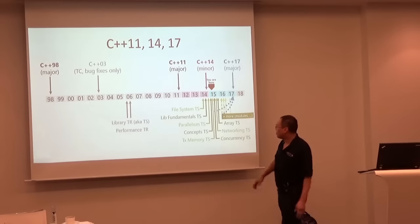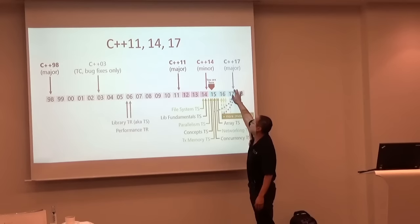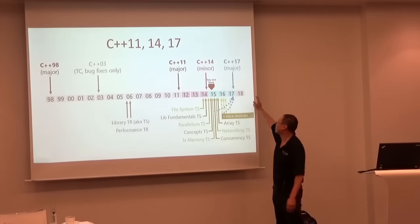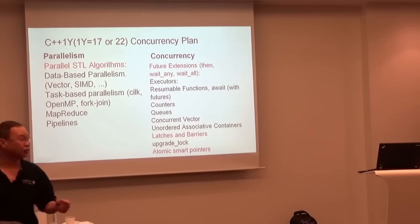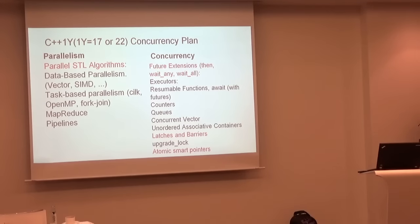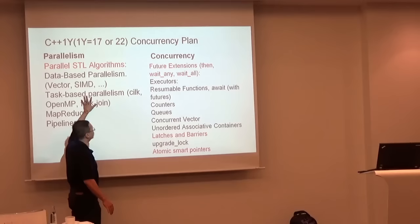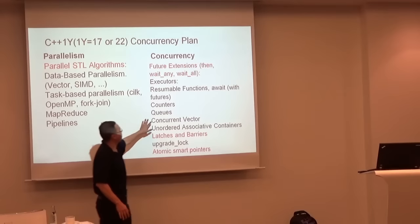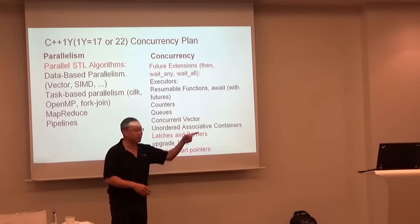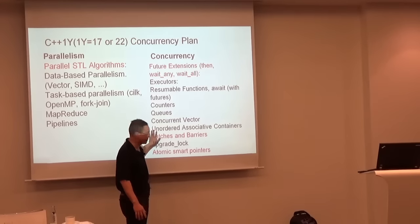In the C++ world, we've got all these Technical Specifications going, looking at releasing a major standard by C++17 and then C++20 and C++22. The big ones coming up are the parallelism and concurrency specifications. The parallelism TS has parallel STL — a way to parallelize the standard template library. The concurrency TS has future extensions: .then, wait, any, wait all, as well as latches, barriers, and atomic smart pointers. The parallelism TS future will likely add dataflow parallelism, vector SIMD, task-based parallelism joining Cilk and OpenMP, MapReduce, and pipelines. The concurrency TS will add executors, resumable functions, counters, queues, concurrent vectors, and upgradeable locks.